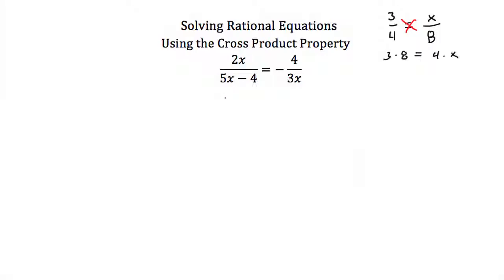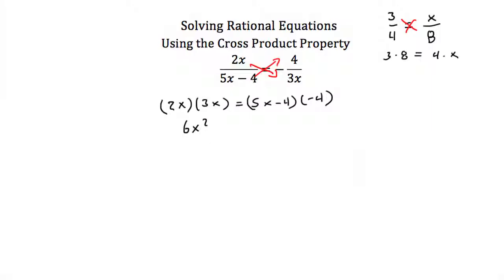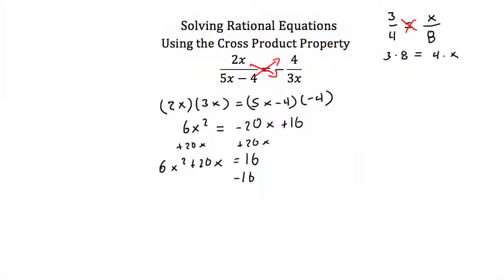We're going to do the same thing with this rational equation: 2x over 5x minus 4 equals negative 4 over 3x. Cross multiplying gives 2x times 3x equal to 5x minus 4 times negative 4. Simplifying: 2x times 3x is 6x squared. Distributing negative 4 inside the parentheses gives negative 20x plus 16. Since we have a quadratic, I'll move everything to one side by adding 20x to both sides, giving 6x squared plus 20x equals 16.